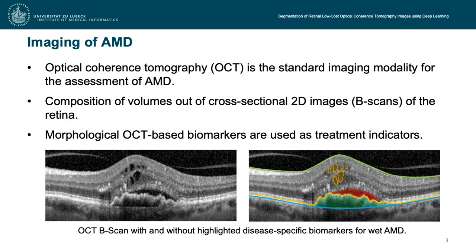For the assessment of AMD, optical coherence tomography is used as the standard imaging modality. OCT generates image volumes of the retina composed of non-adjacent 2D cross-sectional images, also called B-scans. Morphological OCT-based biomarkers such as fluid accumulations, highlighted in yellow, red, and green in the right image, as well as the retinal thickness, calculated from the difference between the upper and lower retinal boundaries, are used as treatment indicators.